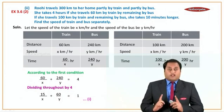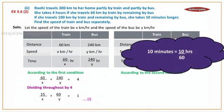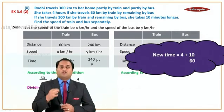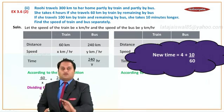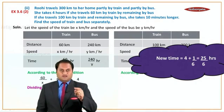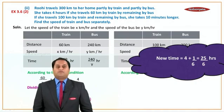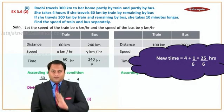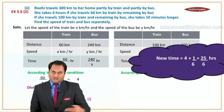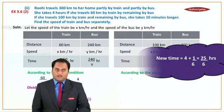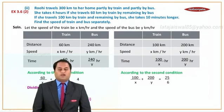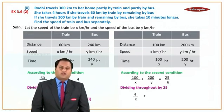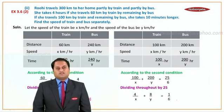The total time is 4 hours and 10 minutes longer. Since everything is in kilometers per hour, 10 minutes equals 10/60 hours. So the new total time is 4 + 10/60 = 4 + 1/6. Taking the LCM: 24/6 + 1/6 = 25/6 hours. So the equation is: 100/x + 200/y = 25/6. Dividing throughout by 25: 4/x + 8/y = 1/6. Let this be equation number 2.